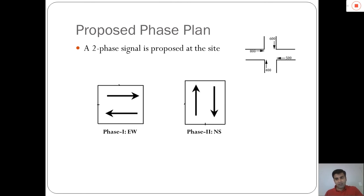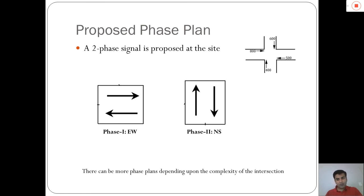The very first thing as part of signal design is to propose a phase plan, where a phase plan means the simultaneous movement of traffic that can take place at an intersection. For the given intersection, we propose a two-phase plan: phase one is the east-west movement of traffic and phase two is the simultaneous movement of the north-south traffic. The number of phases can be greater than two depending on the complexity of the intersection.